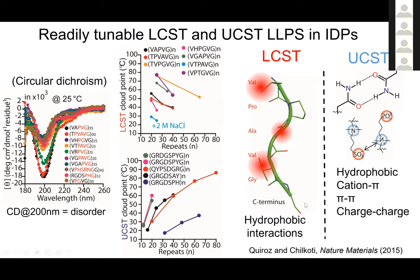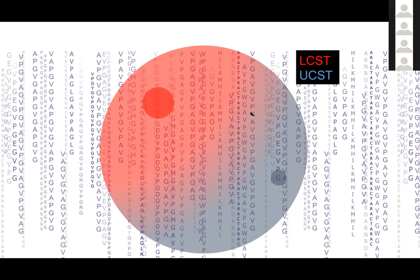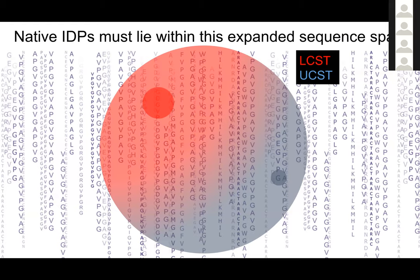I encourage you to look at our Nature Materials paper, which summarizes some of those heuristics. The exciting thing for us was that at the beginning of these efforts, we knew very little about how to navigate this sequence space. But after a lot of effort, we realized there was a large sequence space we could explore to encode both LCST and UCST behaviors, with regions where those behaviors would start interacting — pointing to the fact that naturally occurring IDPs might fulfill all the sequence requirements.